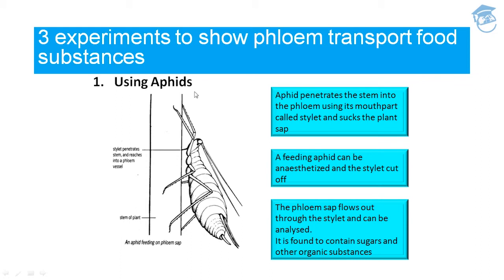The first experiment uses aphids — a type of insect. The stylet of an aphid penetrates the stem of a tree and reaches into the phloem vessel. The aphid feeds on phloem sap by penetrating the stem using its mouthpart called a stylet and sucking plant sap from the phloem. A feeding aphid can be anesthetized and the stylet cut off; phloem sap then flows out through the stylet and can be analyzed. It was found to contain sugar and other organic substances, showing that phloem transports food substances, mainly sucrose.